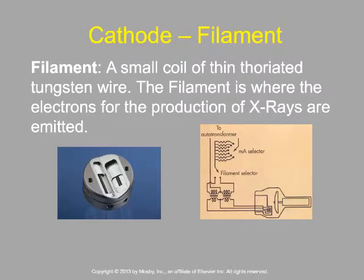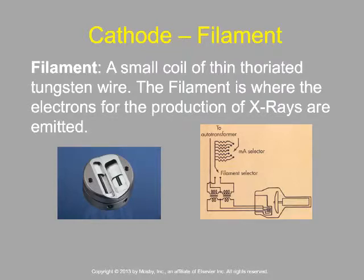When we energize the x-ray tube circuit, we use the mA selector with a step-down transformer to create an increased amount of current — stepping down the potential but stepping up the current. We then use a little tiny wire, which produces more friction for the electrons. As they move through the circuit and hit that tiny wire, there's enough friction that the electrons get hot and start to boil off electrons, trying to power their way through the filament.